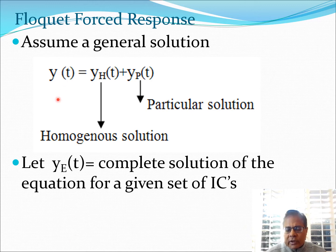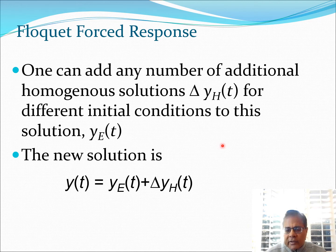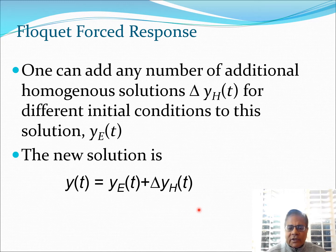Let us assume a general solution of the form y(t) equals y_H(t) plus y_P(t), where y_H(t) is the homogeneous solution and y_P(t) is the particular solution. We also let y_E(t) be the complete solution of the equation for a given set of initial conditions. One can add a number of extra homogeneous solutions which we will call delta y_H(t) for different initial conditions to this solution y_E(t). You can do this because all these are essentially solutions of the differential equation. So these new solutions we express as y(t) equals y_E(t) plus delta y_H(t).